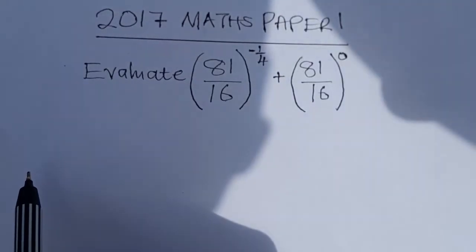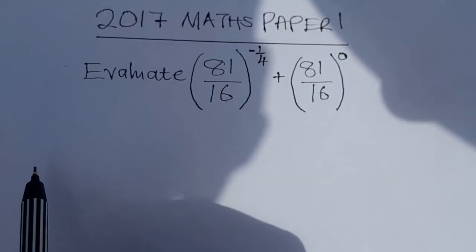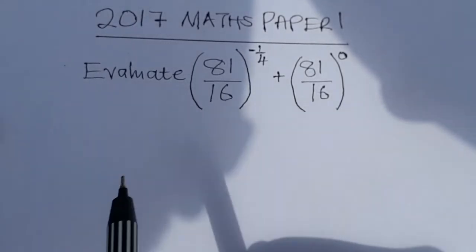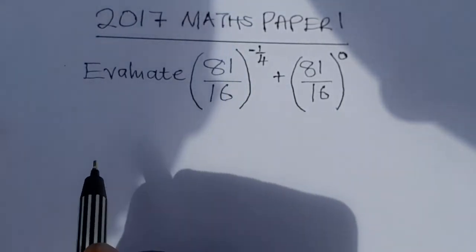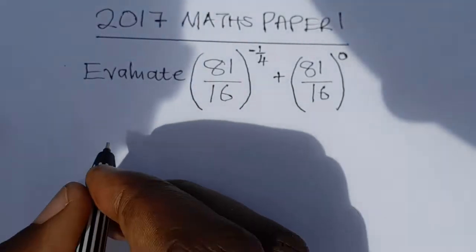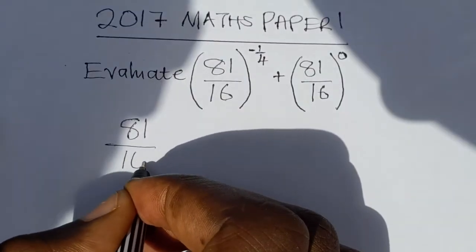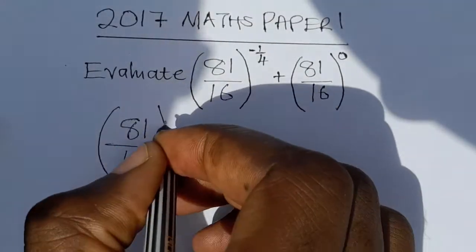In this video we're going to look at the 2017 mathematics paper 1 question 2. The question says evaluate this expression. So let's just rewrite this expression. The expression is 81 over 16 raised to the power negative 1 over 4